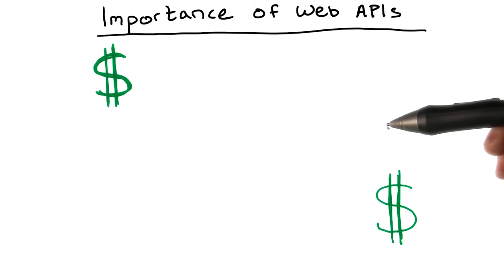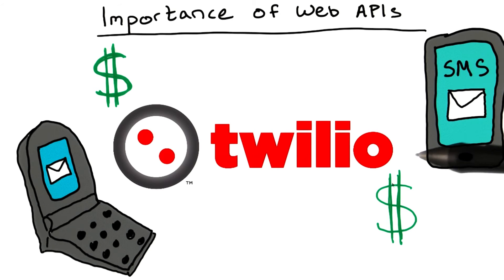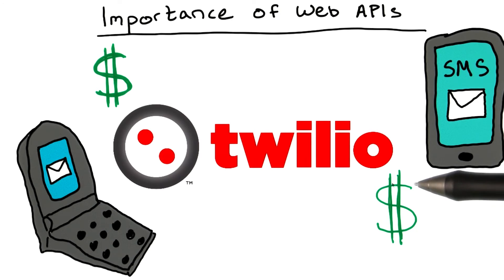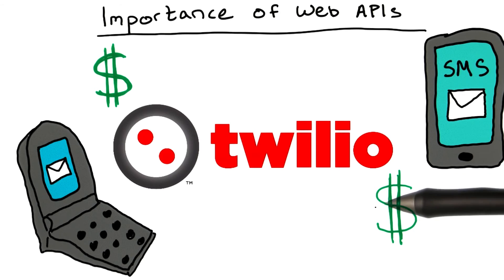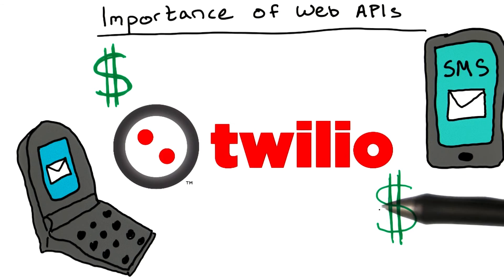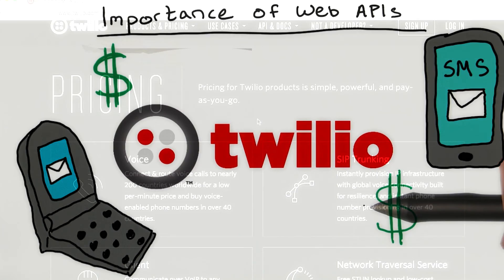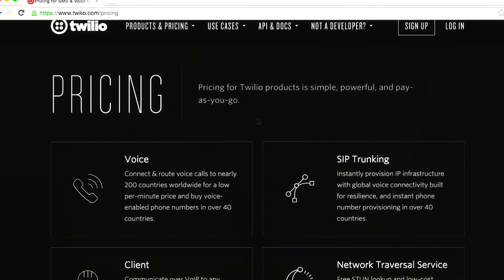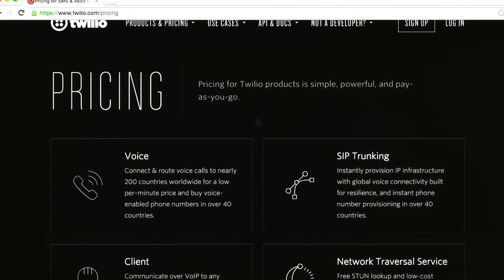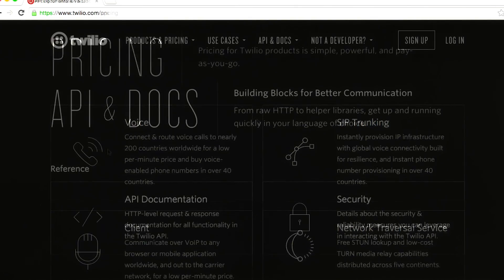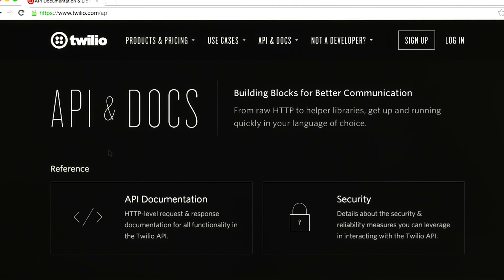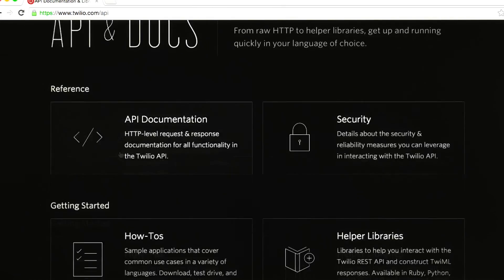And in some cases, a company's proprietary money stream. An example of a company that depends heavily on its API is Twilio, a cloud communications company that allows developers to make and receive phone calls and text messages using its web service API. Twilio has free and paid access versions of their API, forming a key revenue stream for the company. Check out Twilio's developer site and see all of the features of their API.